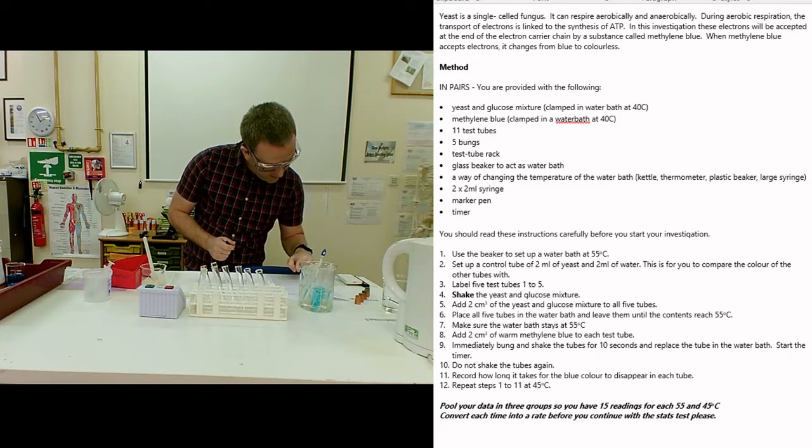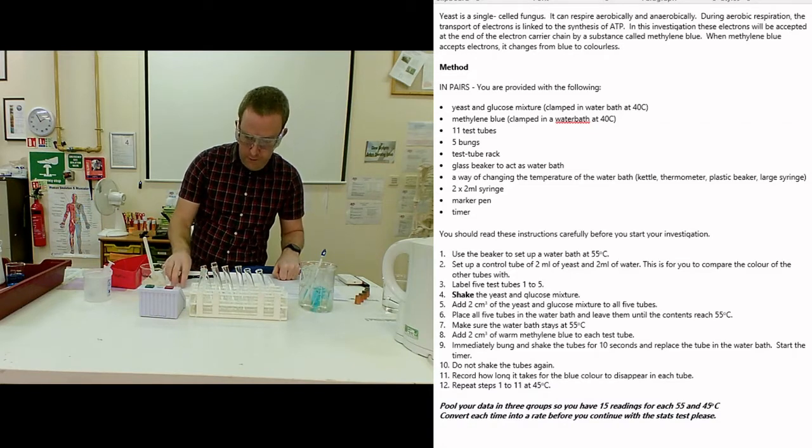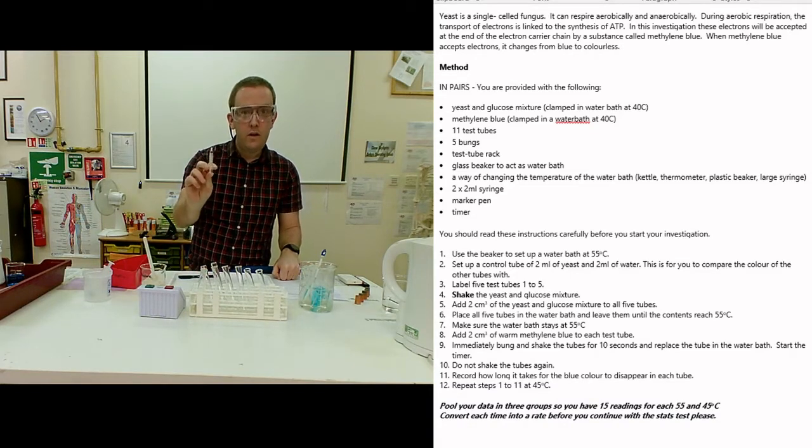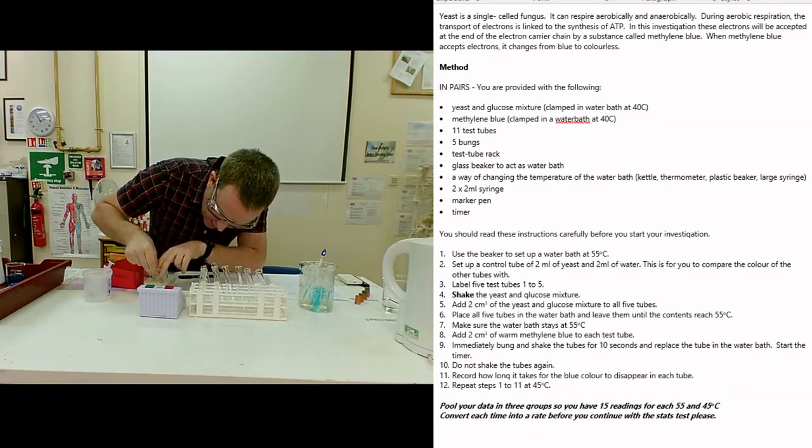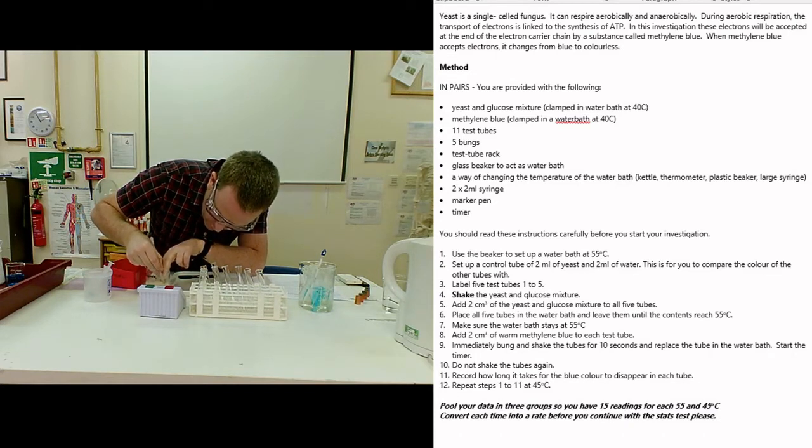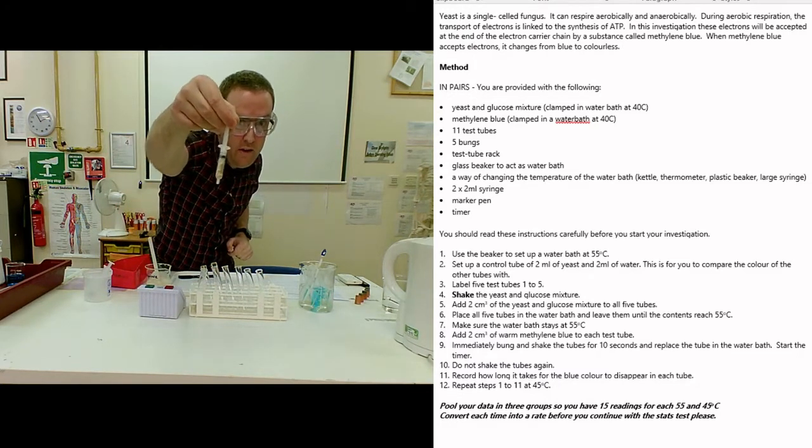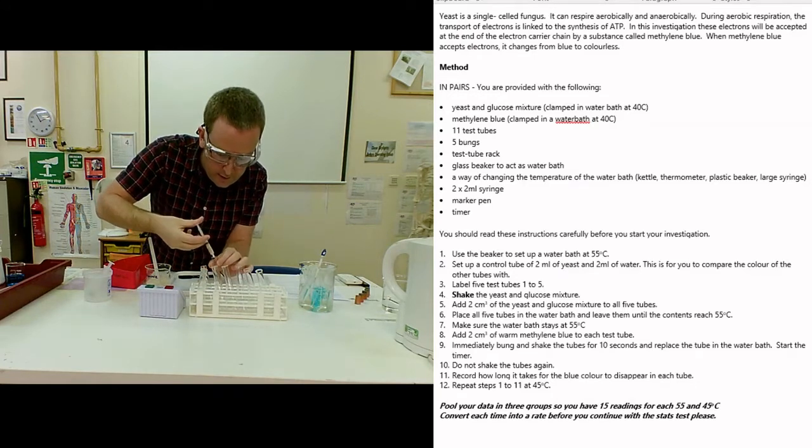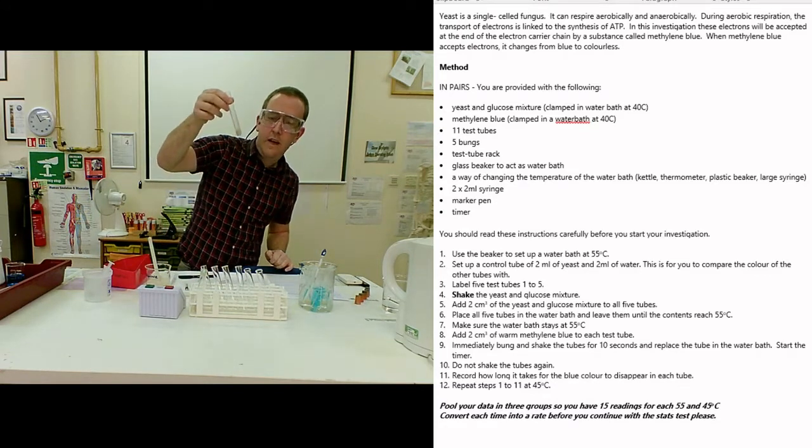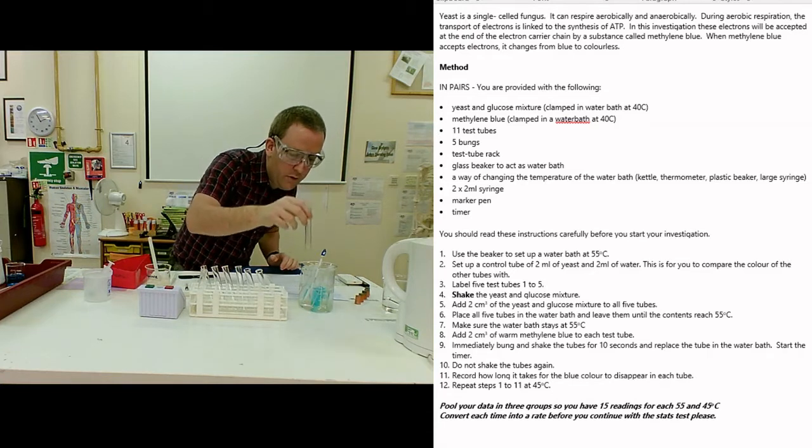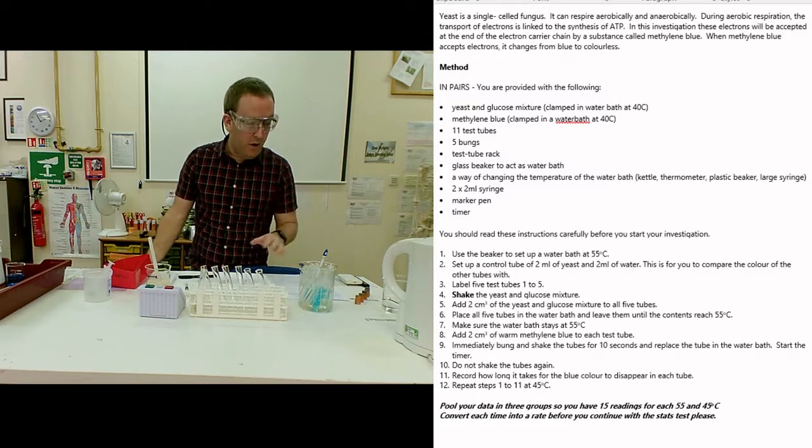Add 2 cubic centimeters of the yeast solution and glucose mixture to all five tubes. Top tip for this experiment: keep one syringe just for the yeast. What I'm going to do is go into my stock here, make sure I'm actually in the liquid not in the foam, draw that up to 2ml making sure there are no air bubbles in there, then go into one of my tubes and pop that in. I need to make sure that is at the same temperature as the tubes I'm trying to use, so I'm going to pop that into the water bath to bring that up to either 55 or 45 degrees C depending on which temperature you're doing.